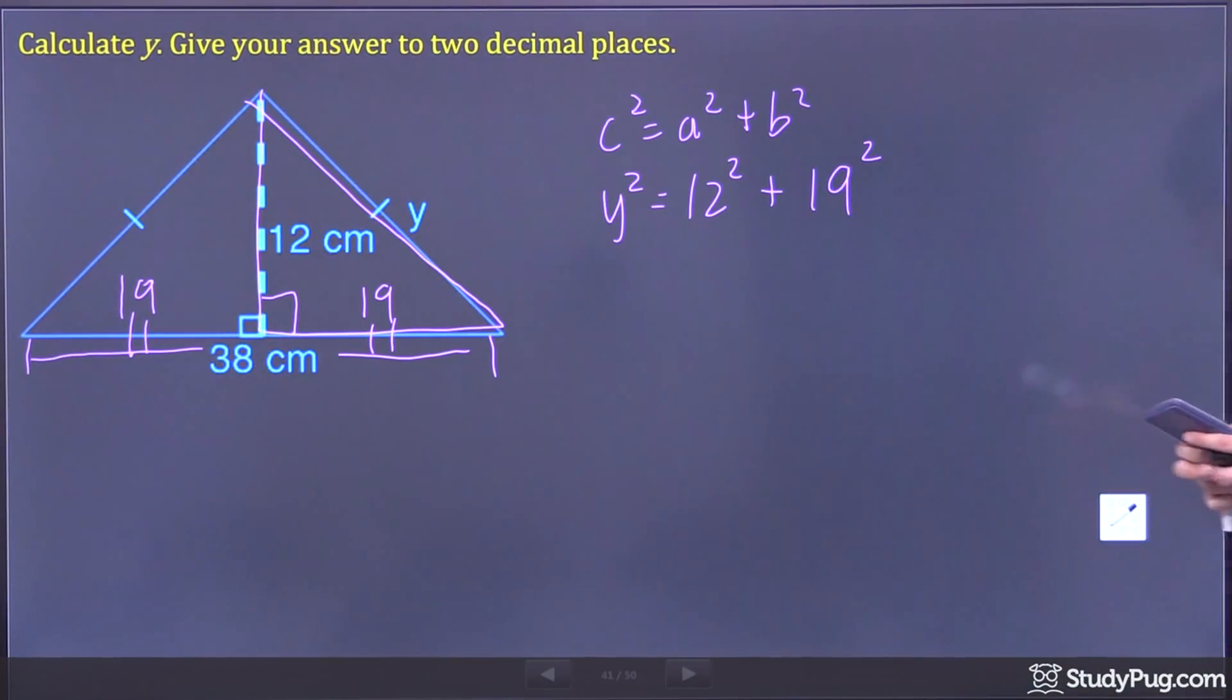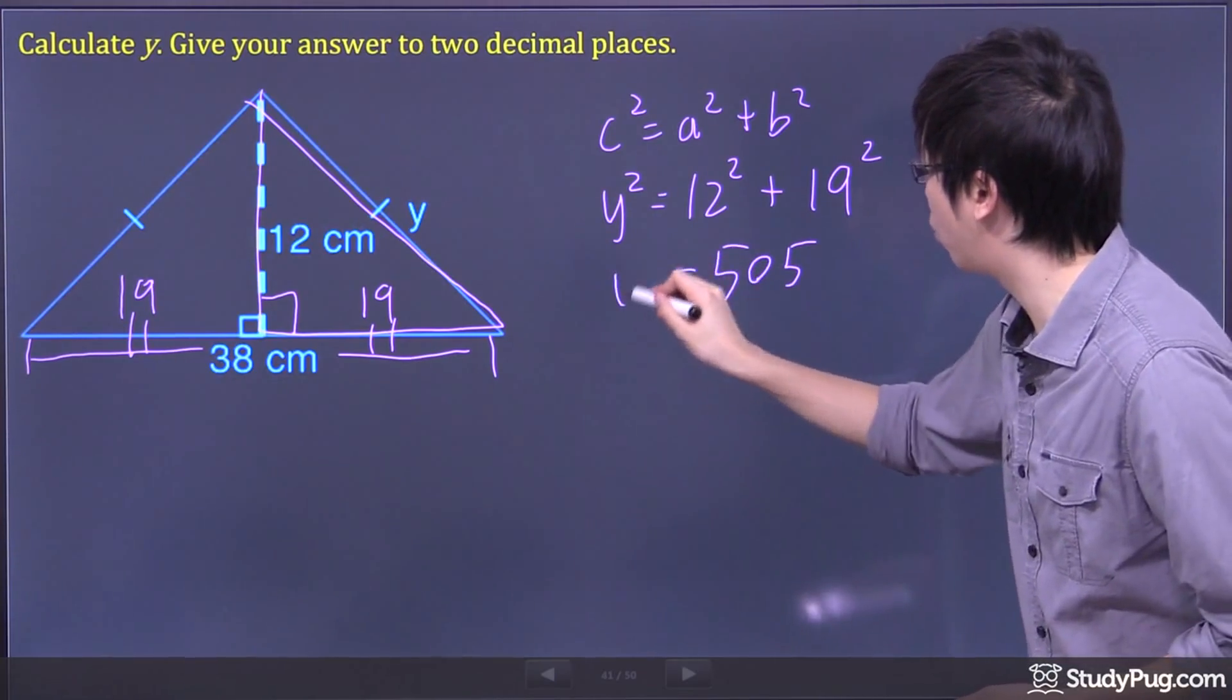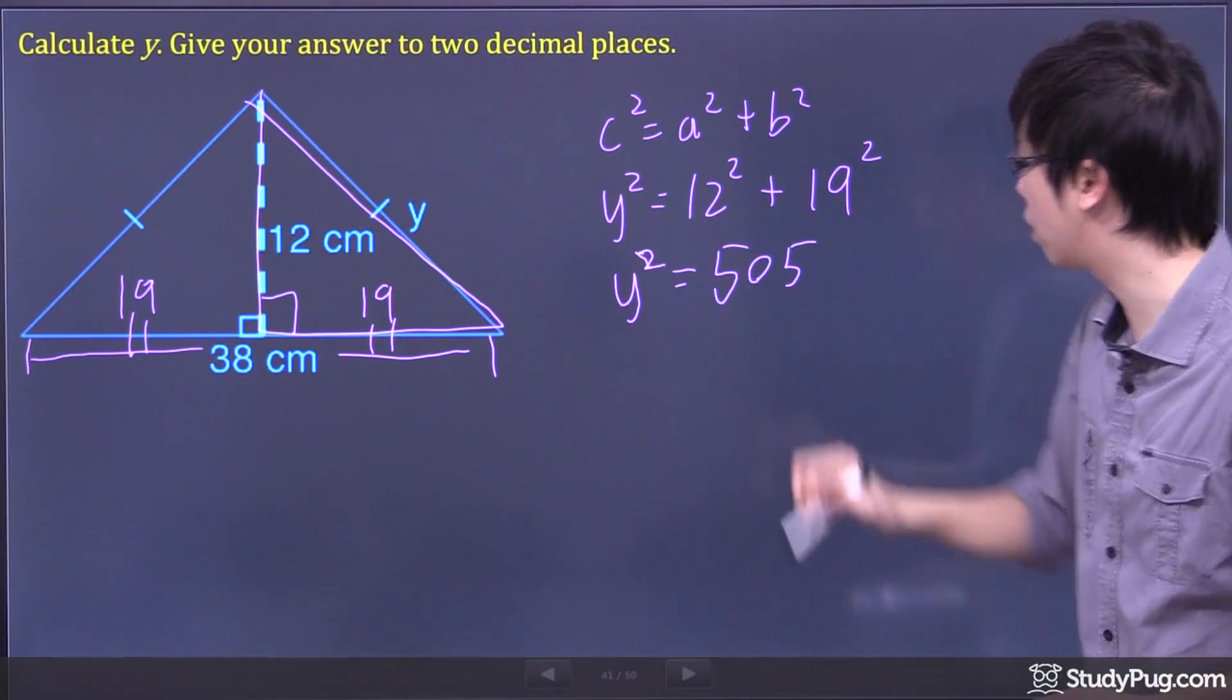Now, you should calculate it quickly. I'm just going to solve both of them together. It gives you the total. It's 505 equals to the Y squared.